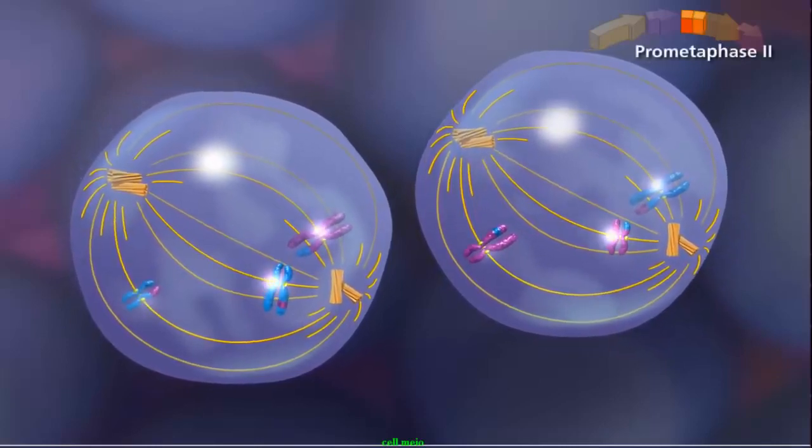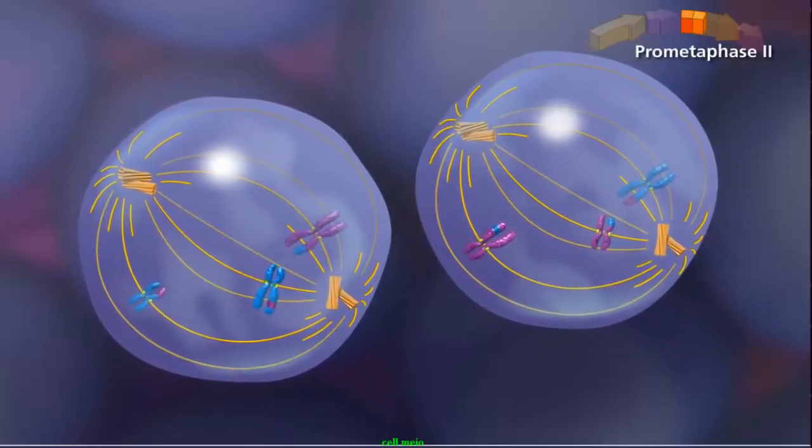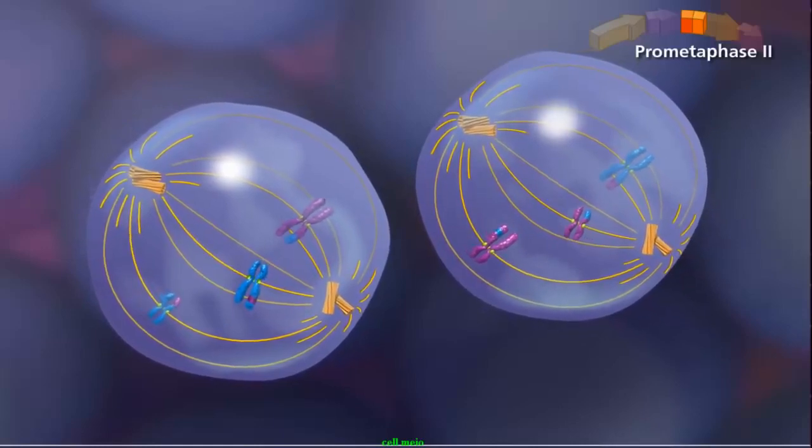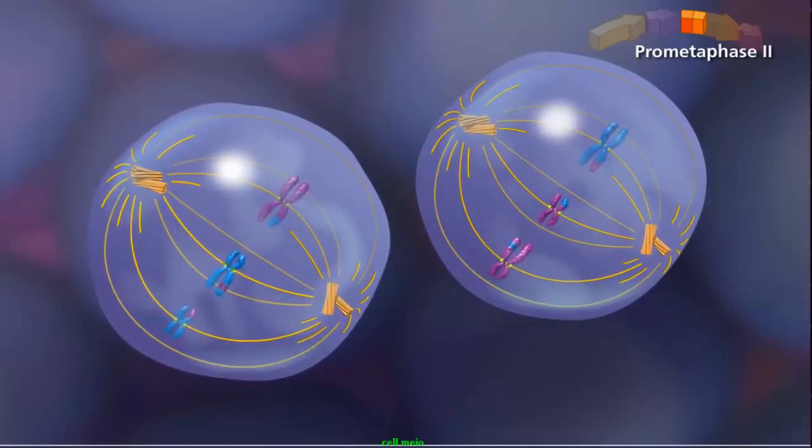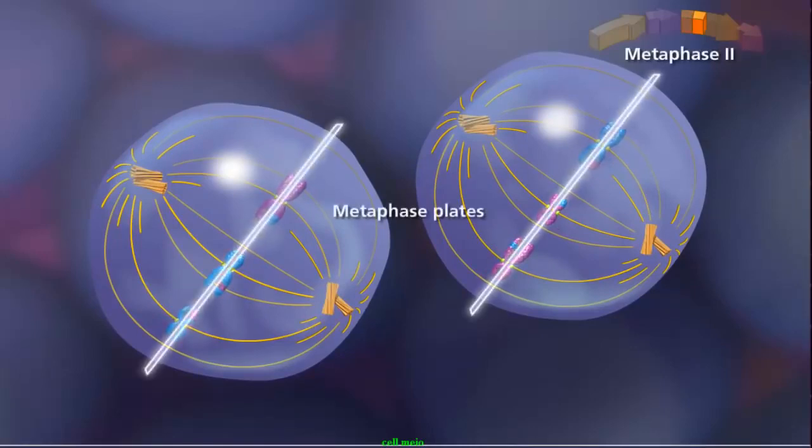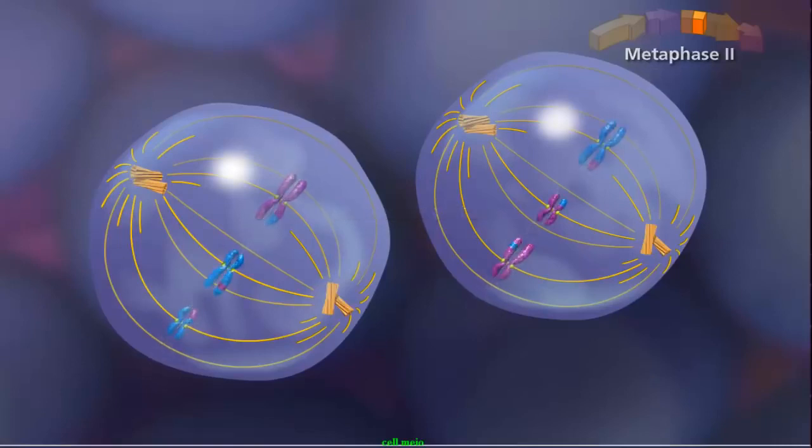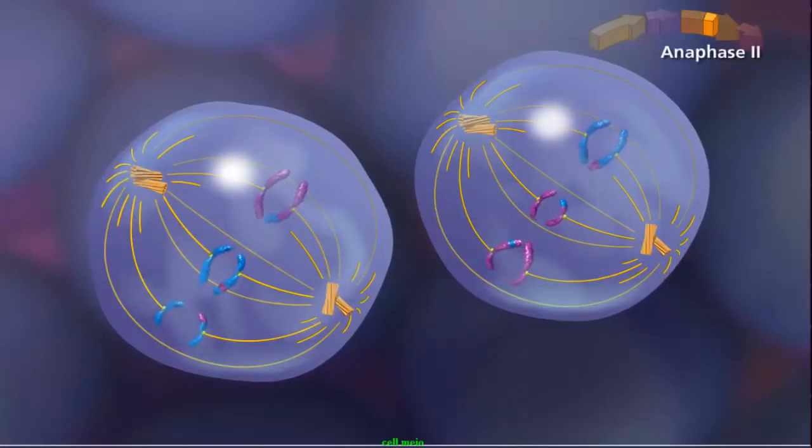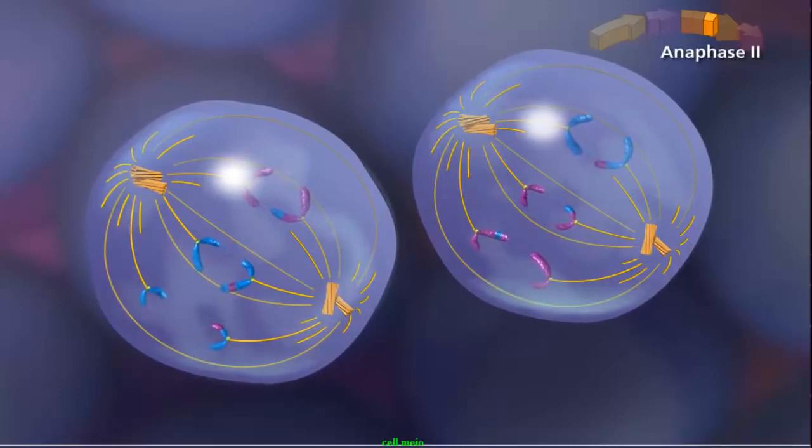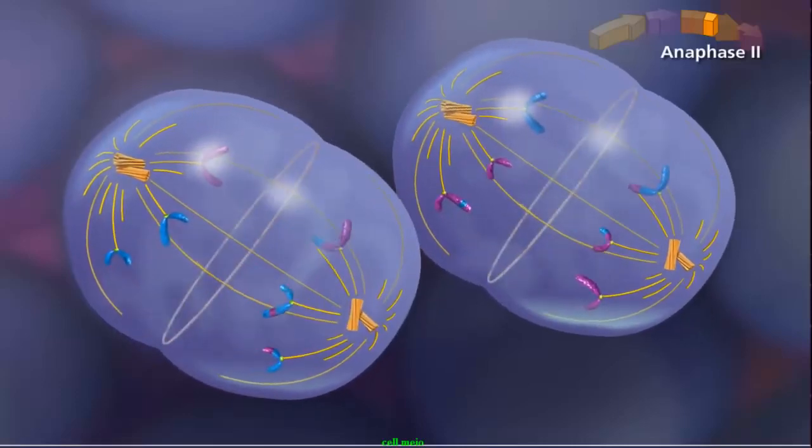In prometaphase II, the sister chromatids attach to the spindle by kinetochore microtubules, with sister chromatids attached to opposite poles. The spindle aligns the sister chromatids along the metaphase plate during metaphase II. During anaphase II, sister chromatids separate and individual chromosomes move toward the poles.